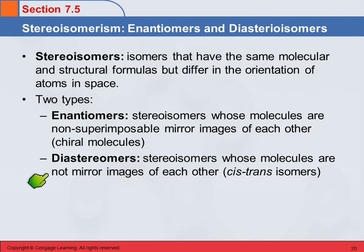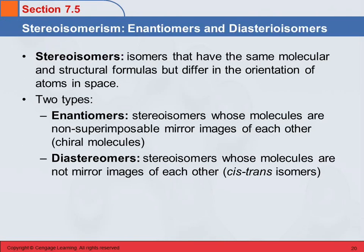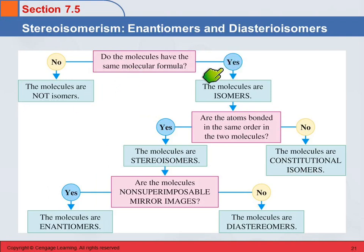The diastereomers are not mirror images of each other. This diagram is helpful, because it's hard to keep all these different kinds of isomers straight. Do the molecules have the same molecular formula? If they don't, they're not isomers — they're just different compounds. If they do have the same molecular formula, like C6H10 or something like that, then they are isomers.